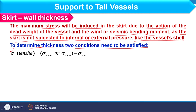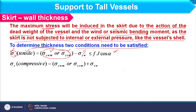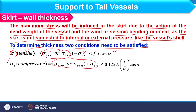The first condition considers tensile stress: sigma_z (resultant tensile) = max(sigma_zwm, sigma_zsm) minus sigma_zw (dead load, compressive) ≤ f·J·cos α. The second condition considers compressive stress: all stresses are positive and the sum must be ≤ 0.125·E·(t/D)·cos α. The larger thickness from both conditions is chosen as the final skirt thickness.